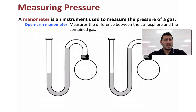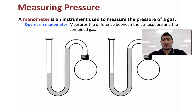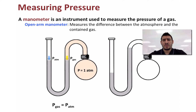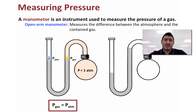Before we fill the manometer with any gas, the level of the left side arm of the U-shaped tube is lower than the right side arm because atmospheric pressure is exerting a pressure on the surface of the mercury. If we fill the manometer with a gas at one atmosphere pressure, the two levels on both sides of the U-shaped tube are the same, and we say the pressure of the gas equals atmospheric pressure.